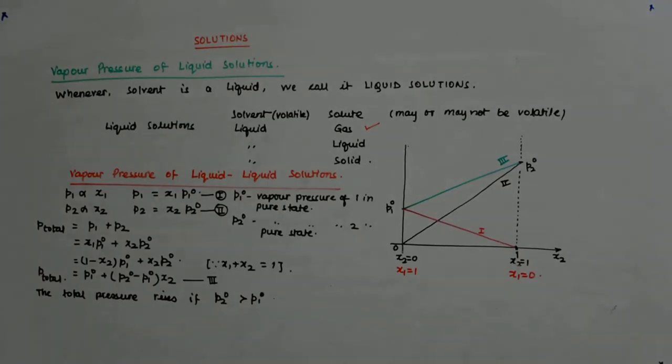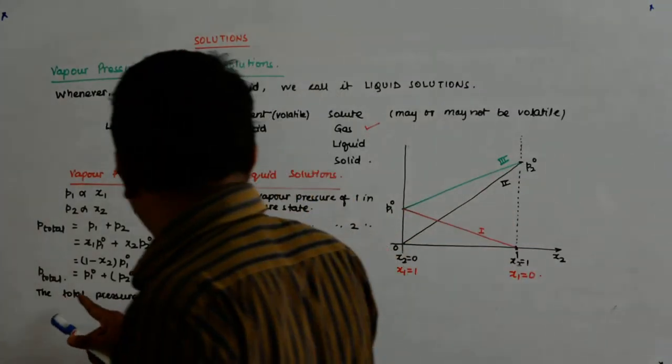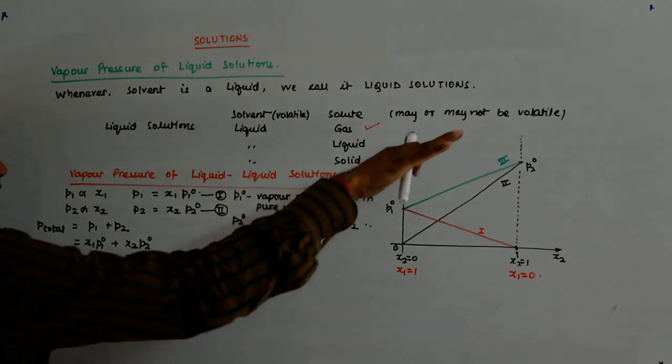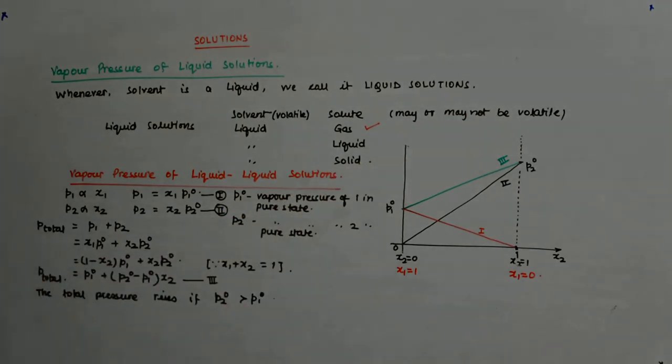So, we say the total pressure has a rising tendency if P2O is greater than P1O and the total pressure falls if P2O is less than P1O.